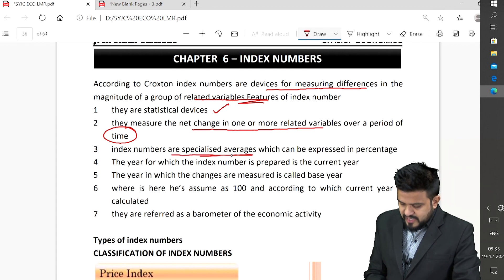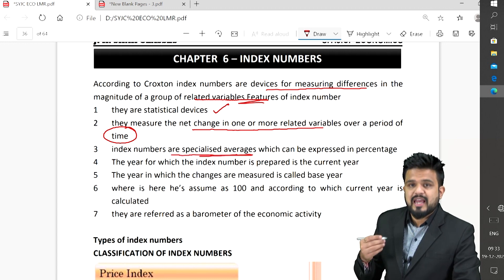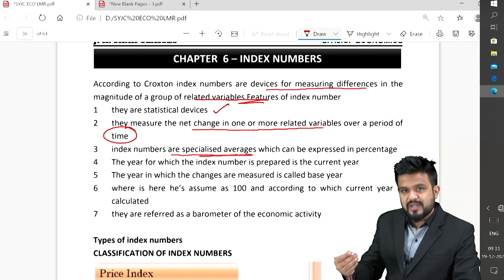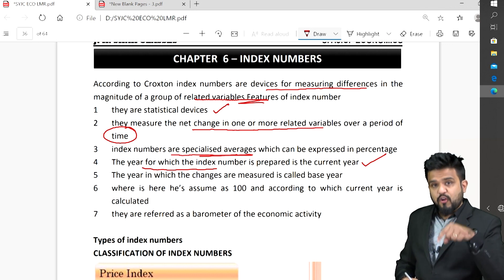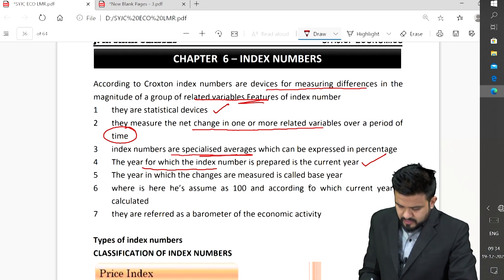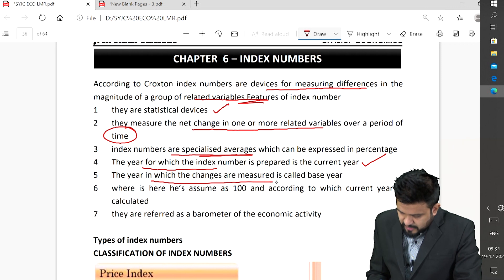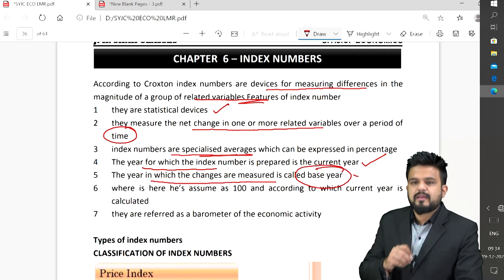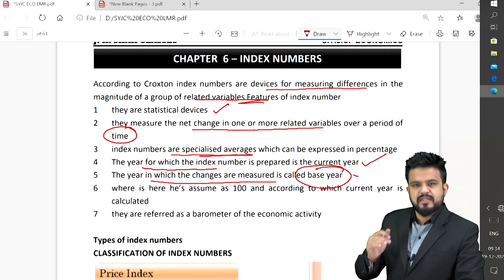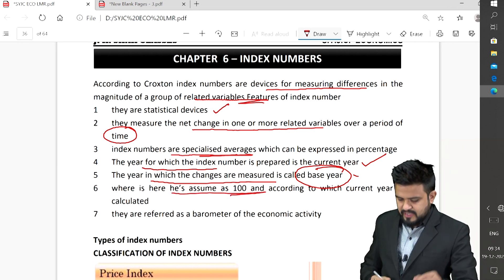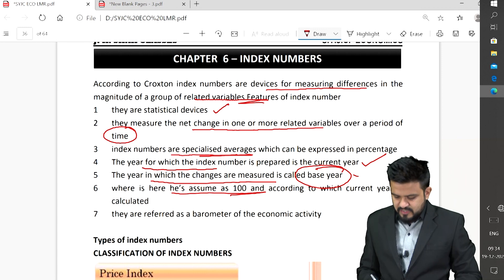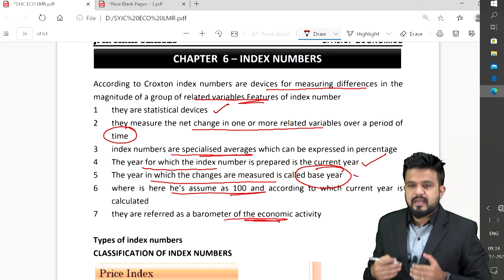They are specialized averages and can be expressed in terms of percentage. The year for which index number is prepared is the current year and the year in which changes are measured is base year. Base year is considered as 100, where we assume 100 as a base year.